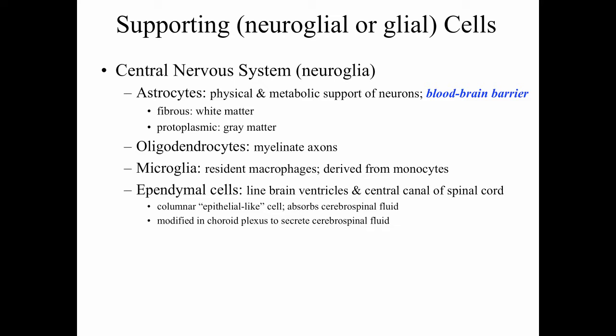Astrocytes function to provide physical and metabolic support for neurons. They contribute to the blood-brain barrier in the central nervous system. We can talk about two classes of astrocytes: fibrous astrocytes and protoplasmic astrocytes. These are actually probably different phenotypic expressions of the same cell type.